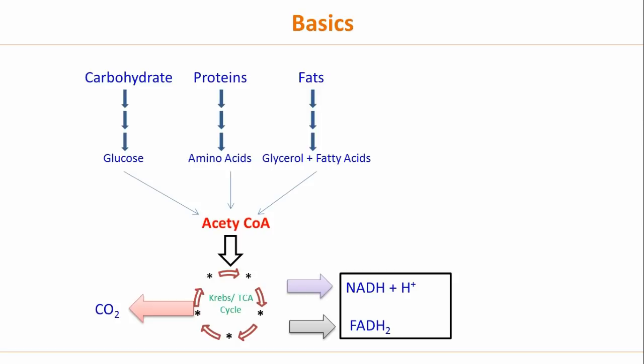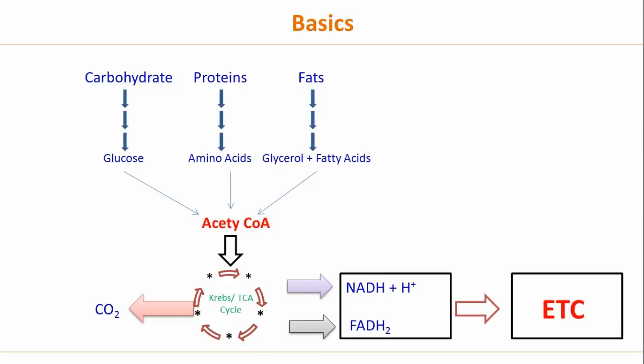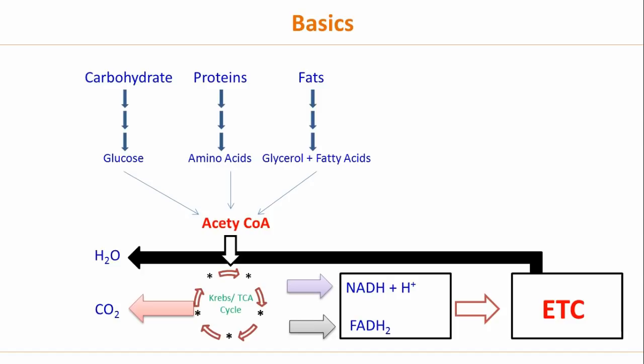Along with carbon dioxide, we have formation of NADH plus H and FADH2. These are carrier molecules which take the hydrogen ions generated from the TCA cycle and transfer them to the electron transport chain. NAD and FAD are converted into NADH plus H and FADH2 respectively, and carry the hydrogen ions from the Krebs cycle to the electron transport chain. At the electron transport chain, these hydrogen ions along with oxygen are converted into water, and during the process, energy in the form of ATP is released.